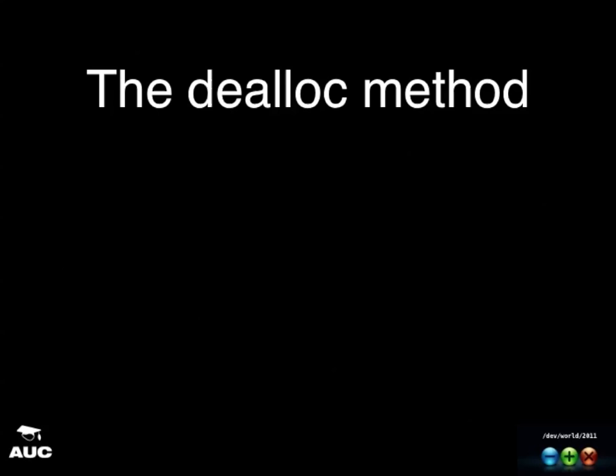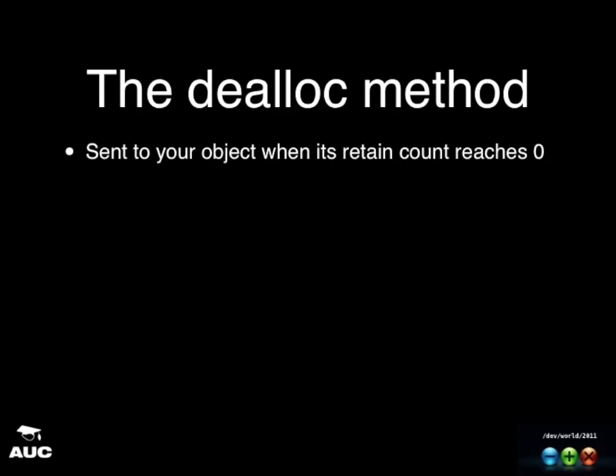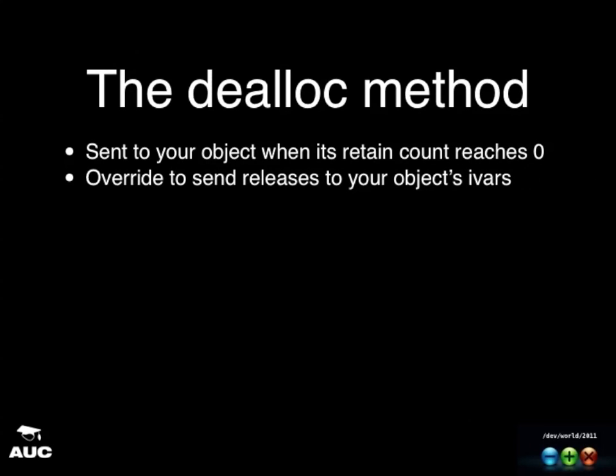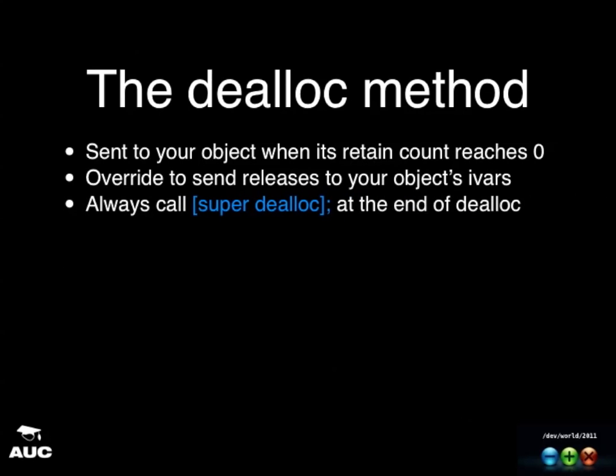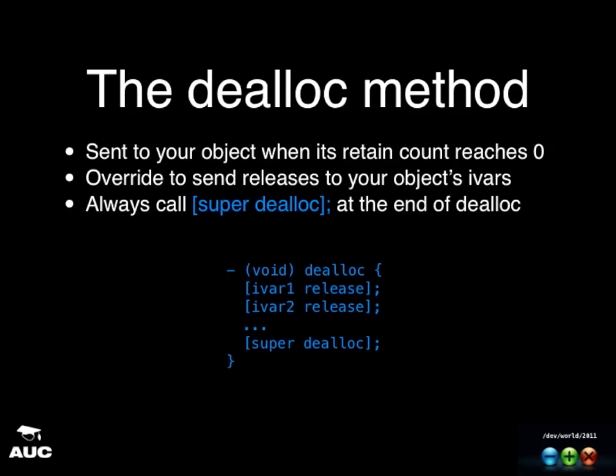If you have created an object with IVARs that you need to release once your object disappears, you do that in the dealloc method. The dealloc method is sent to your object when its retain count reaches zero, so it can do any cleanup before its memory is returned to the heap. You override NSObject's dealloc, which means you need to call super dealloc so the superclass gets to do its cleanup too.